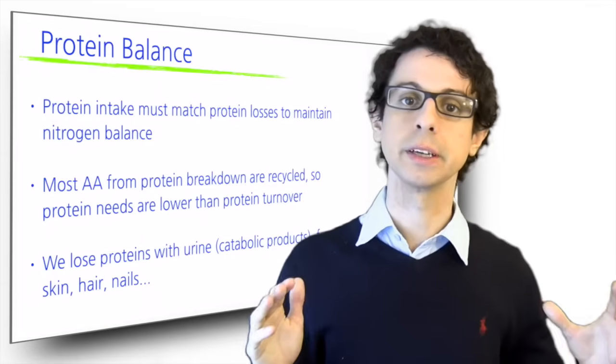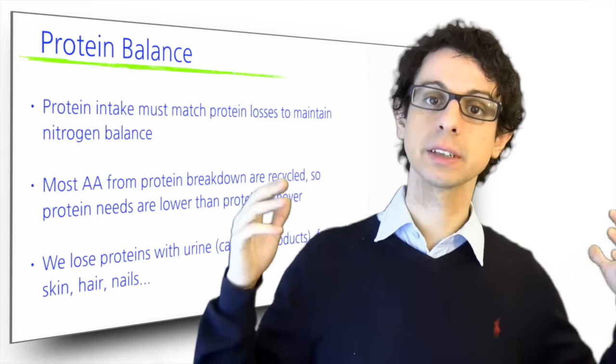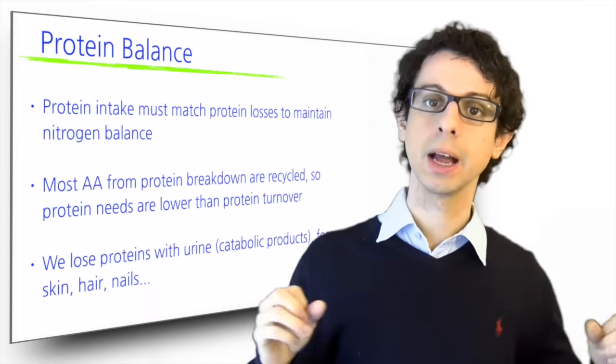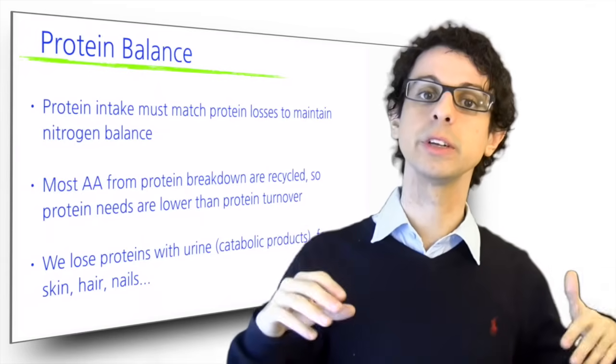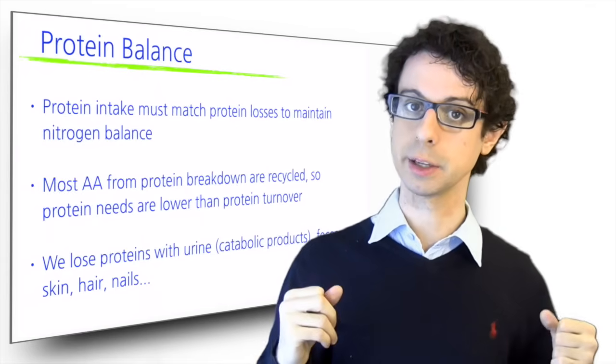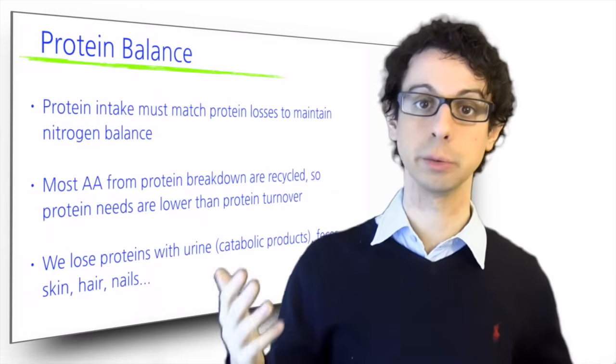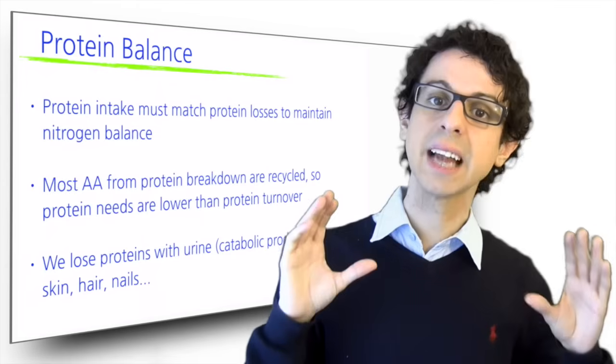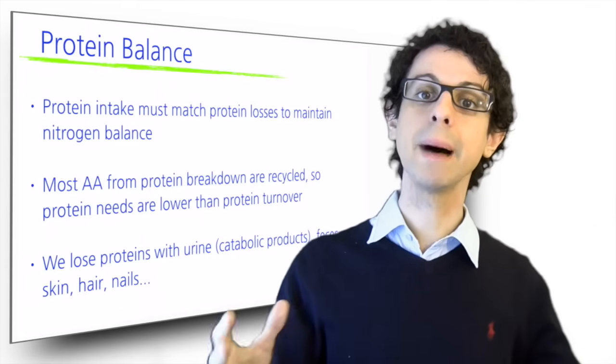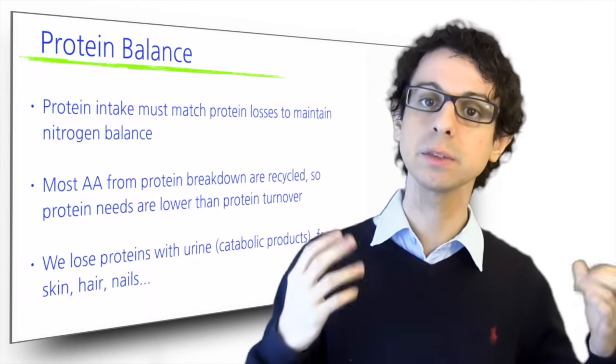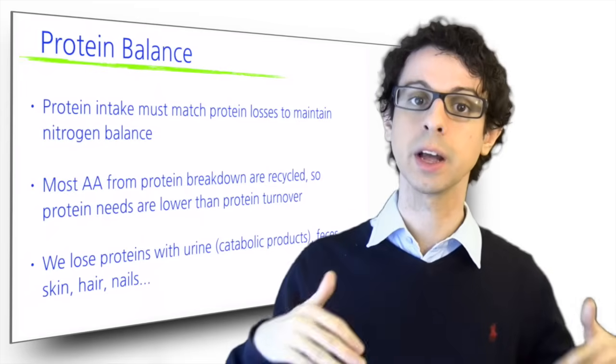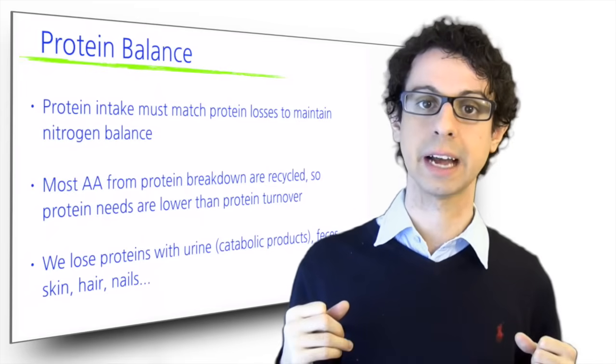How do we lose protein? Our primary route of excretion is the urine. Careful, we do not normally excrete protein themselves in the urine, but we excrete the catabolic products of protein metabolism, such as urea. By quantifying nitrogen in the urine, we can back calculate how many grams of proteins were broken down to get that amount of urinary nitrogen.